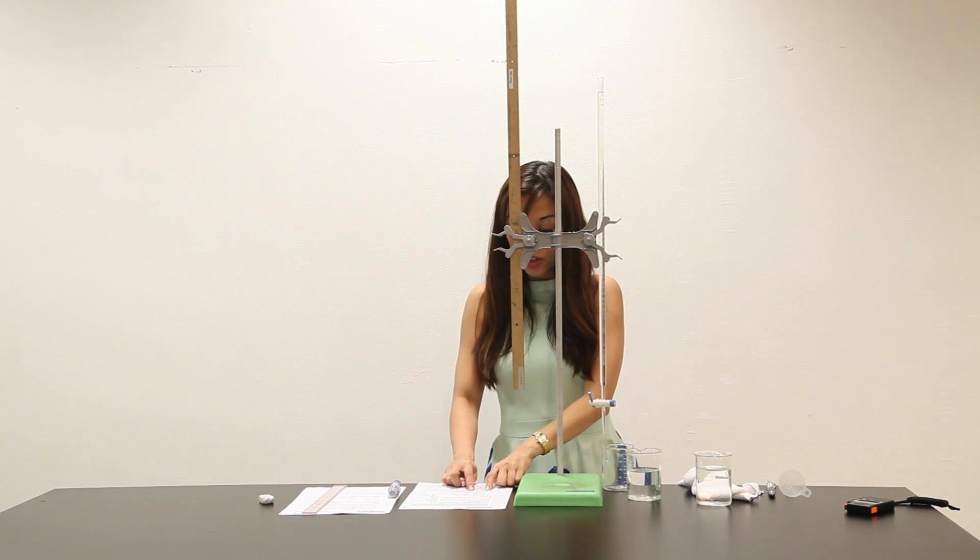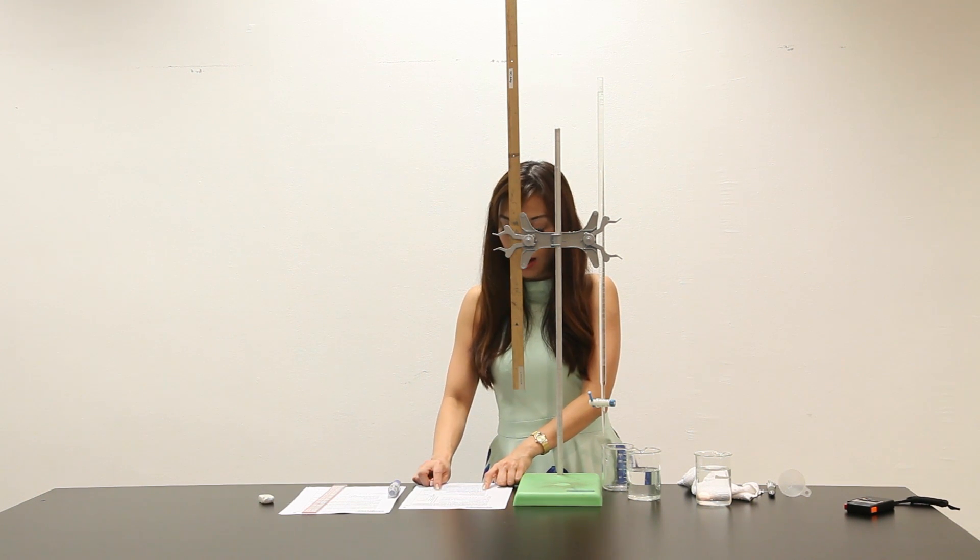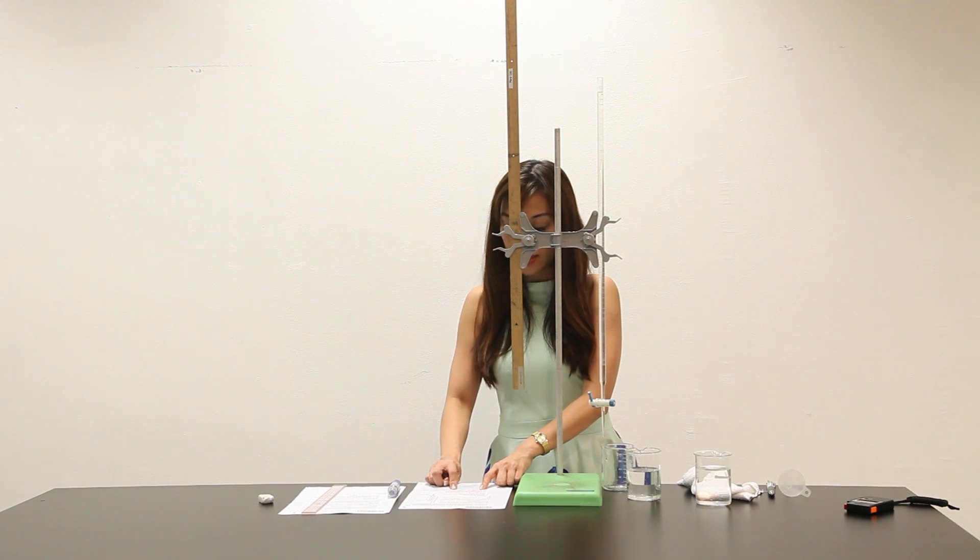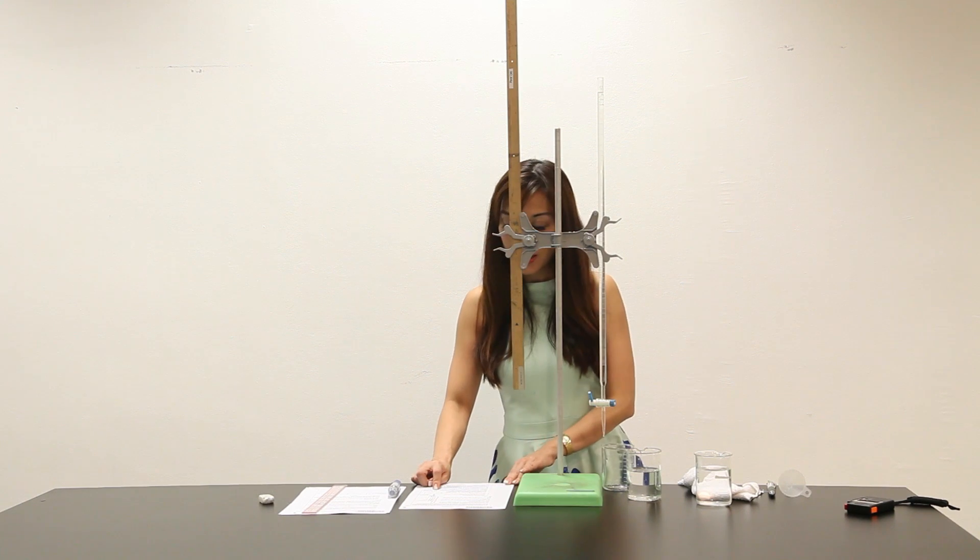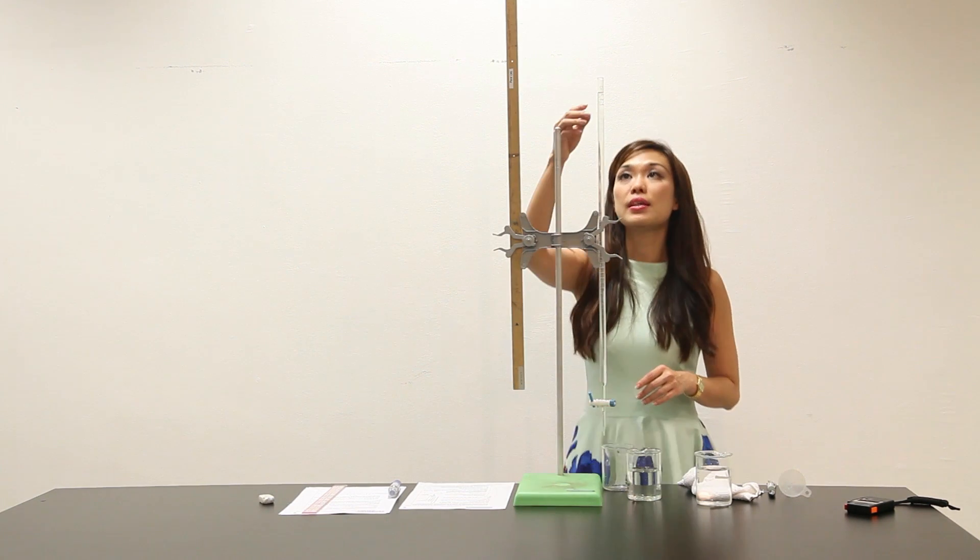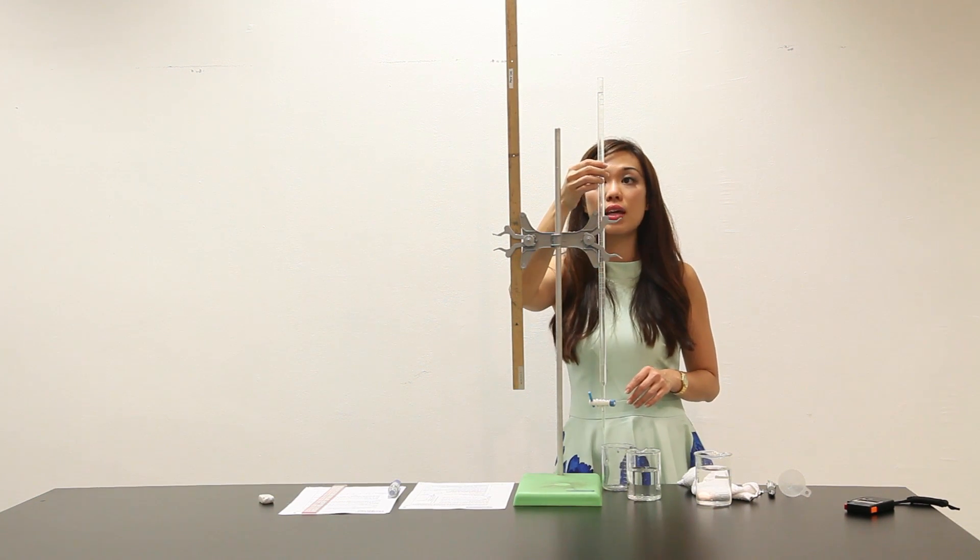Number 5 says that start the stopwatch when the meniscus reading reaches the zero cm³ mark on the burette and stop the stopwatch when it's at the 10 cm³ mark on the burette. So, over here, the zero cm³ is over here. The 10 cm³ is at this range here.